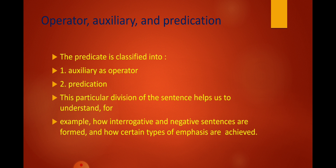This particular division of a sentence helps us to understand, for example, how interrogative and negative sentences are formed, and how certain types of emphasis are achieved. When we have a negative sentence, we are going to have an operator, and when we have an interrogative sentence, also we could see the operator. And sometimes when we emphasize a sentence, also we see the operator.